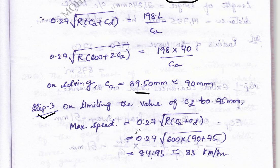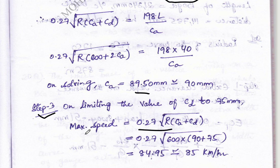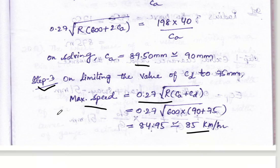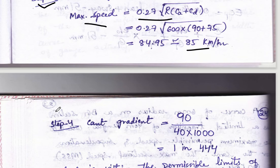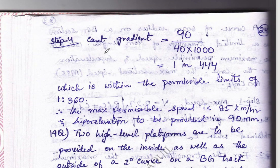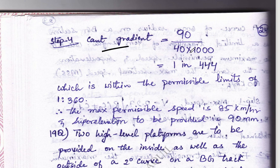Step 3: limiting the value of CD to 75 mm. Therefore the maximum speed can be calculated by 0.27 into under root of R times CA plus CD. Using this formula we get the maximum speed. Now coming towards step 4, in this we have to calculate the CAD gradient.